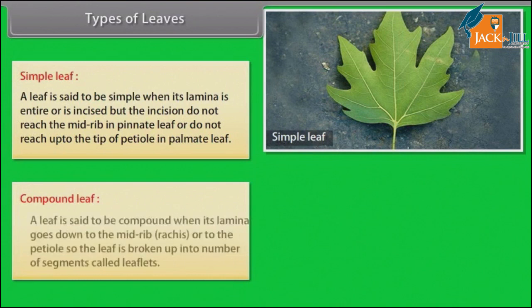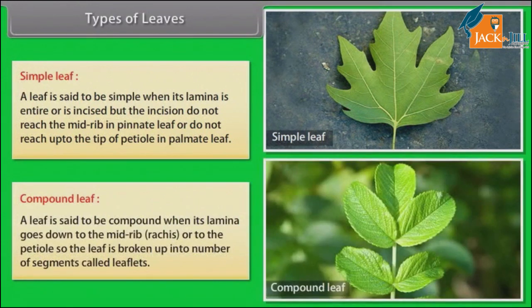A leaf is said to be compound when its lamina goes down to the mid-rib or to the petiole, so the leaf is broken up into a number of segments called leaflets.